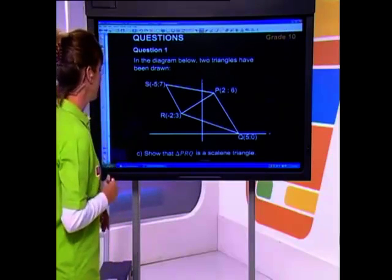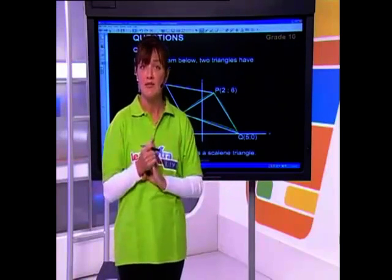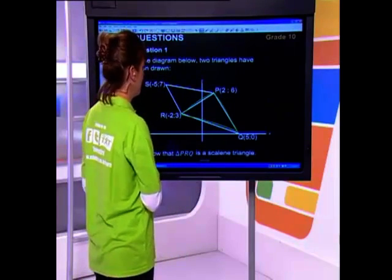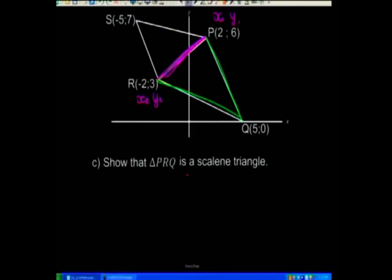The next thing they're asking for is to prove that triangle PRQ is a scalene triangle — the bottom triangle. A scalene triangle has three different sides, so we want to prove we've got three different lengths. Let's put the formula to practice and work out the three different lengths. We already know from earlier that PR equals 5, so let's not waste time there. It's always a good idea to write the formula down first — it sets you up and keeps things clear.